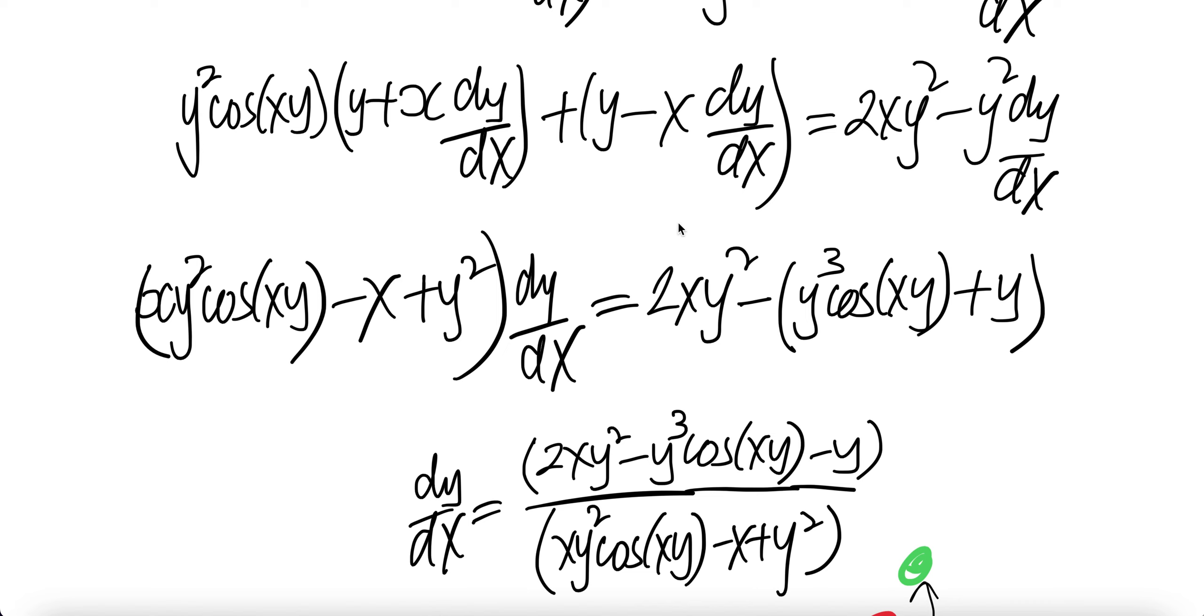Then move everything not dy/dx to the right hand side. And then this piece is y cubed. Y squared and y is y cubed cos xy, and then this one is plus y. And don't follow them negative because when you bring this whole thing to this side it will become a negative.